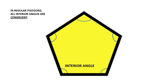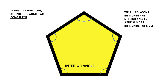You could have a pentagon that has all five sides the same but not all five angles the same — it would not be regular. But in a regular polygon, all the interior angles are definitely congruent. Also, the number of interior angles has got to be the same as the number of sides, and that's true for all polygons, not just regular ones.